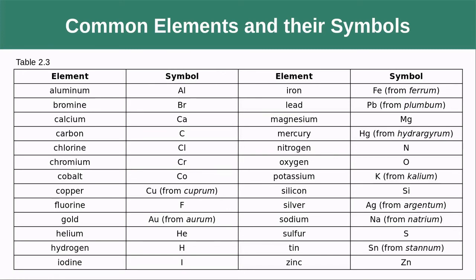Here is a list of some of the more common elements and their symbols. Aluminum is Al, bromine is Br — those make good sense. But then you get things like gold being Au, from the ancient Latin word 'aurum'; iron being Fe from 'ferrum'; and lead being Pb from 'plumbum.'